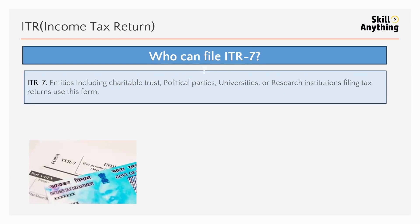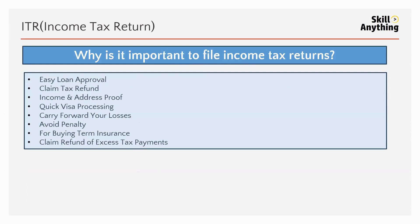Who can file ITR-7? ITR-7 is filed by charitable trusts, political parties, universities, and research institutions. They can file their income tax return using ITR-7.